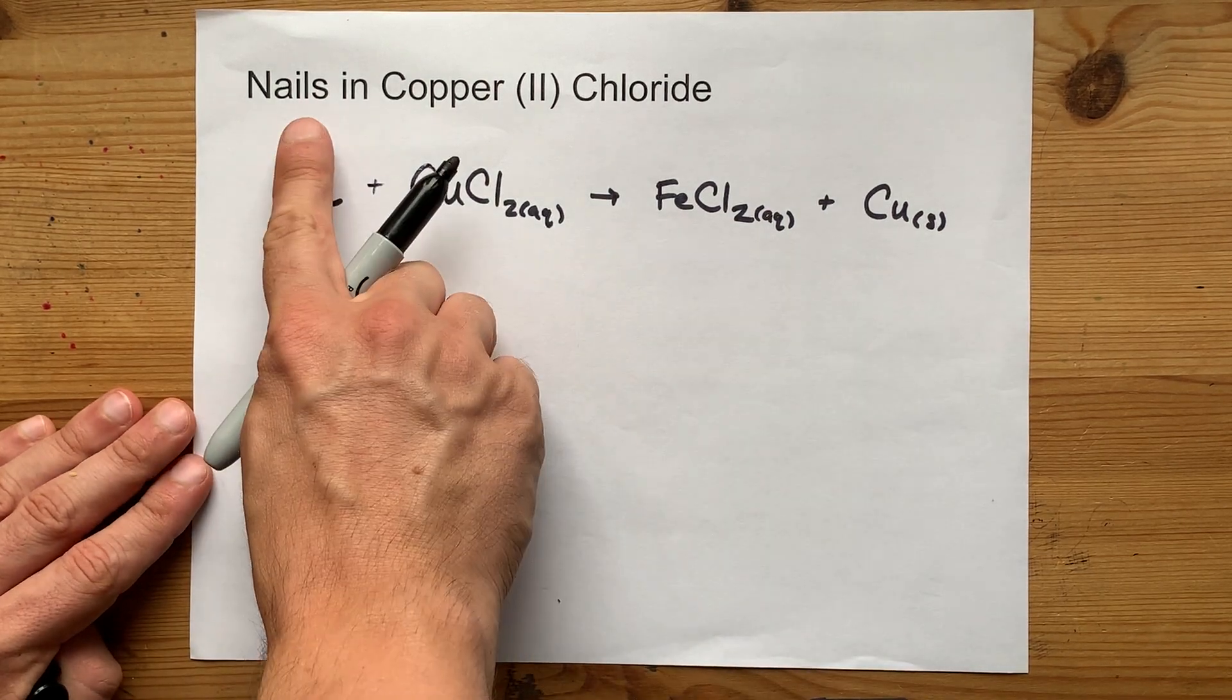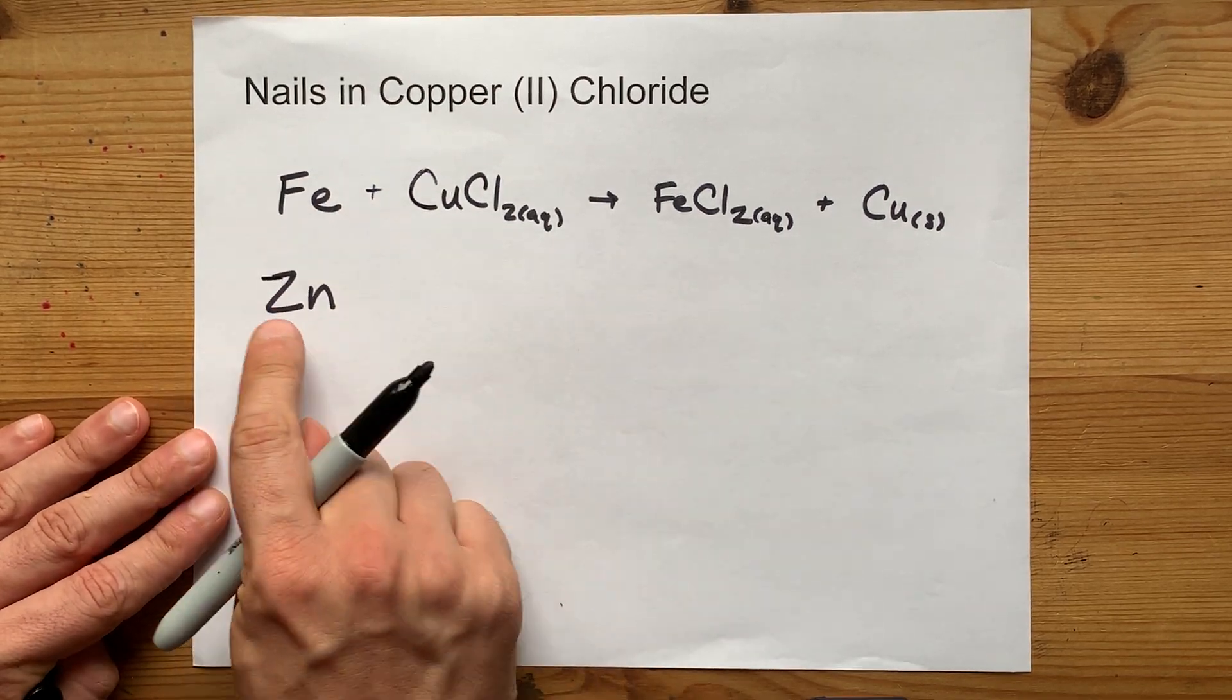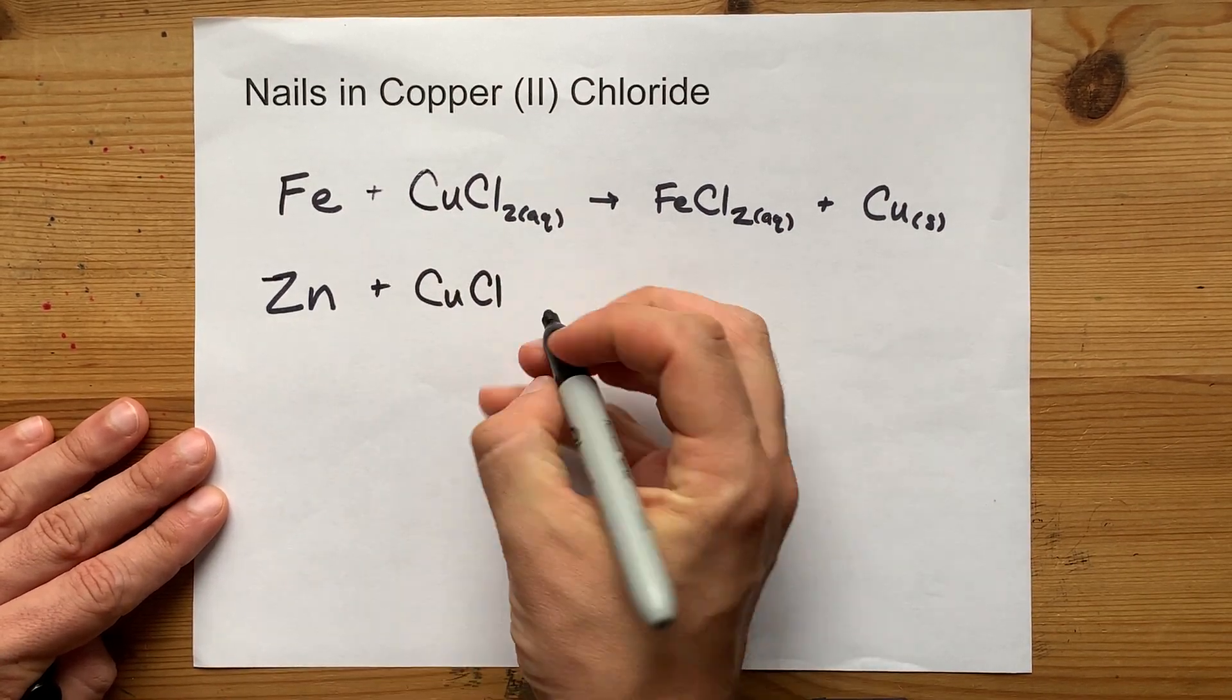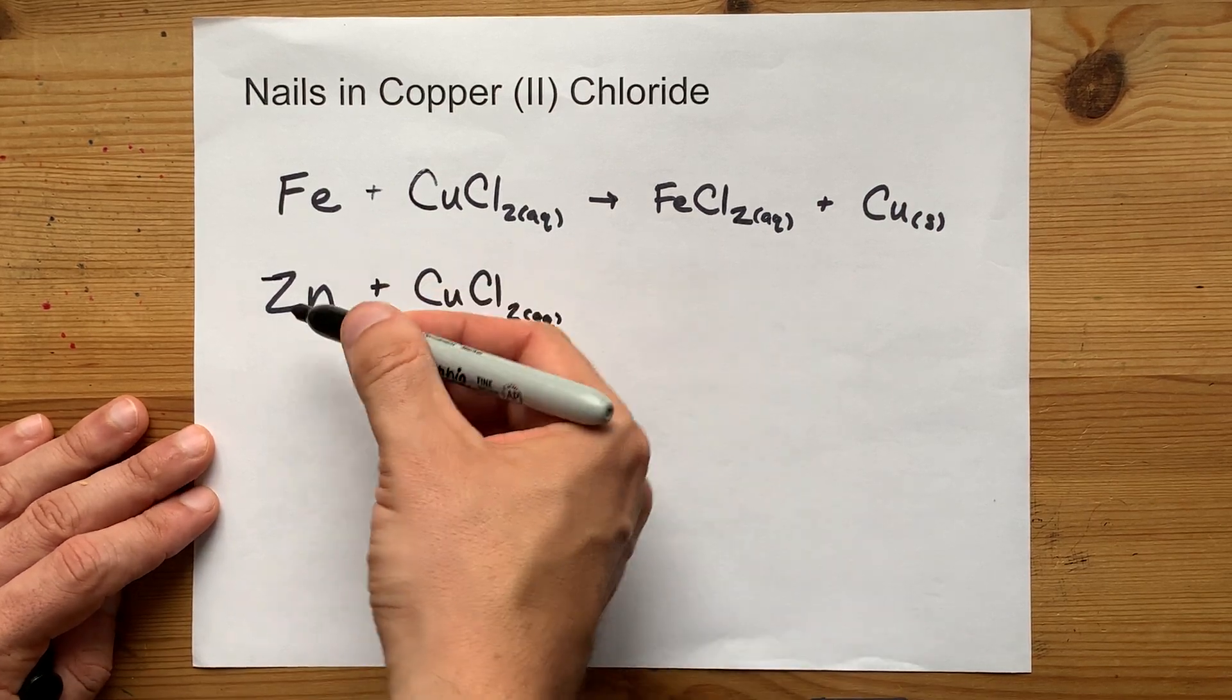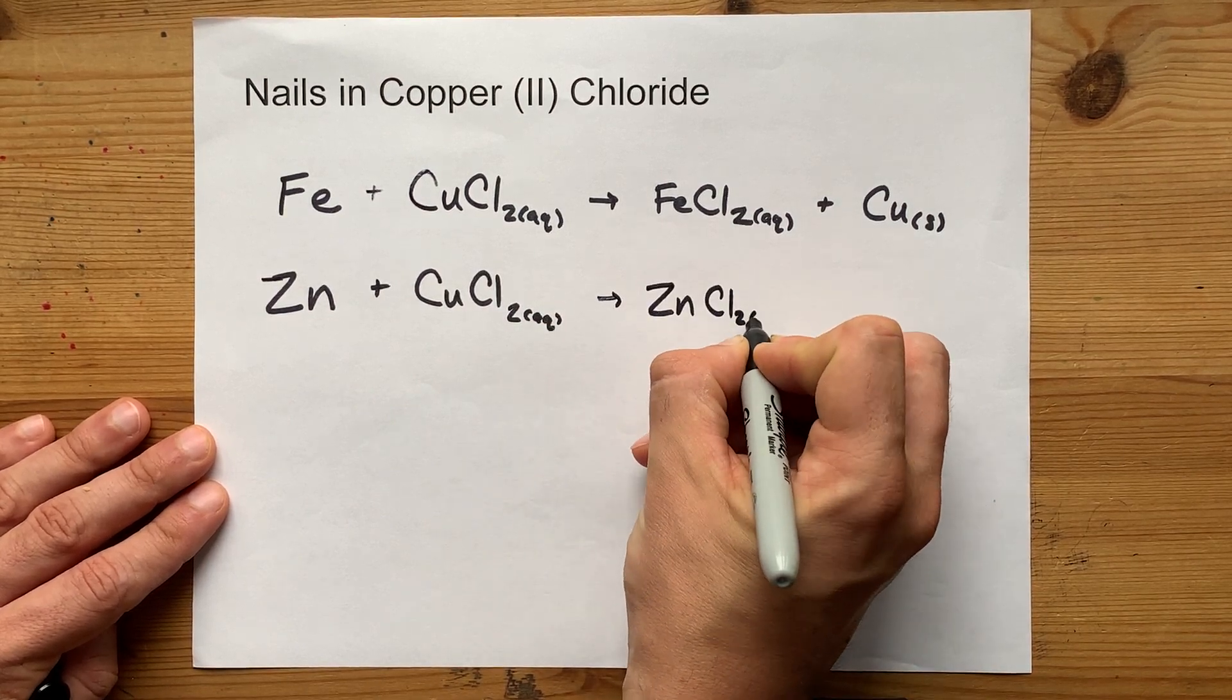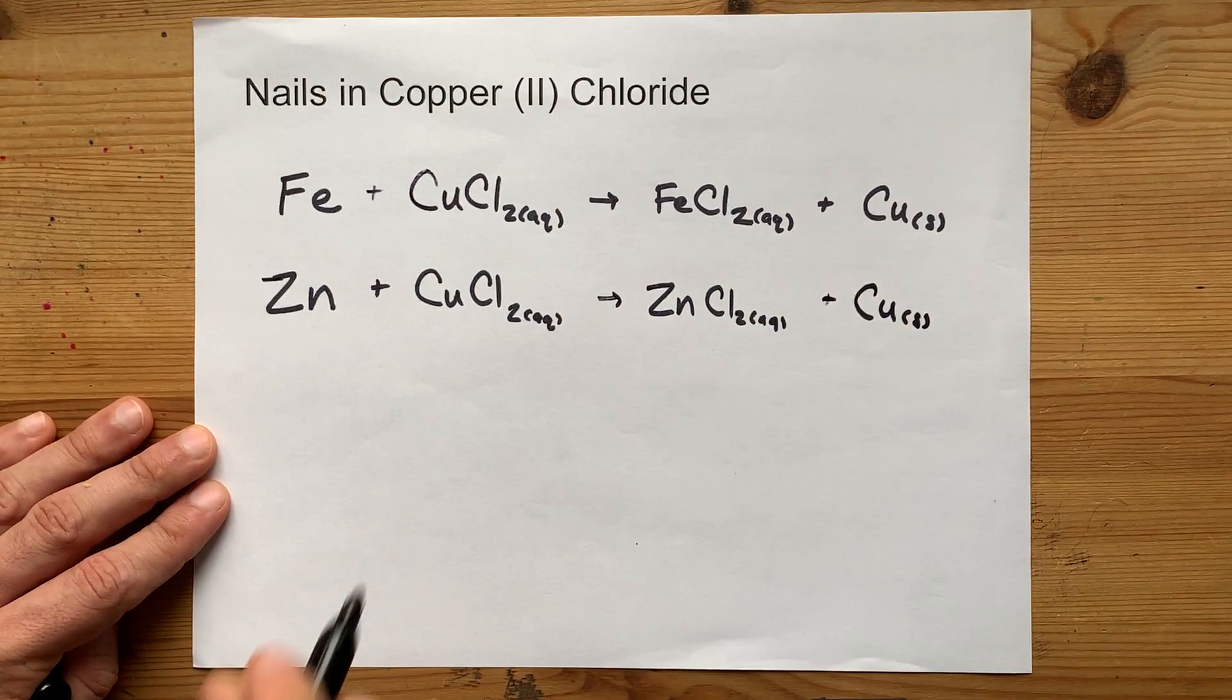If you happen to have a galvanized nail, what that means is it's probably steel underneath, but they've coated it with zinc to prevent it from oxidizing. But that's no match for copper-2-chloride solution because zinc is more reactive than copper. So metallic zinc will also take the place of copper here. You'll get zinc-2-chloride solution and still produce copper solid.